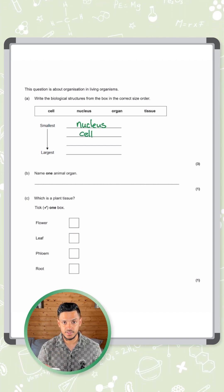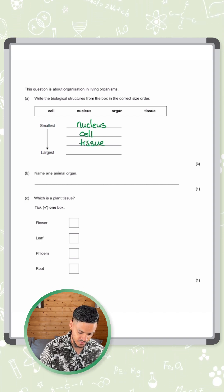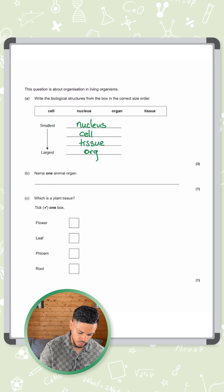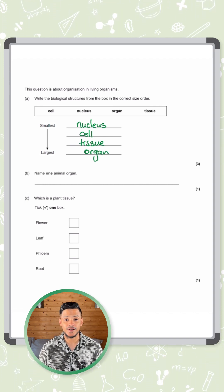Loads of similar cells working together for a specific function makes up a tissue, and then loads of different tissues working together makes up an organ. So that would be next on the list. So that's how you get three marks there.